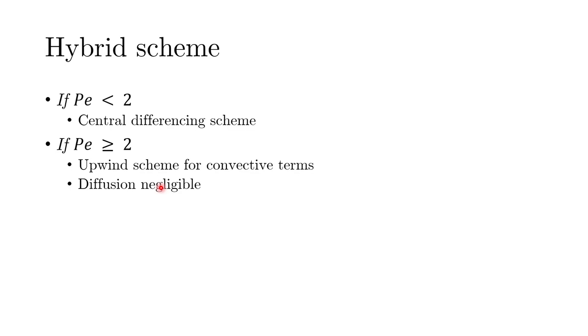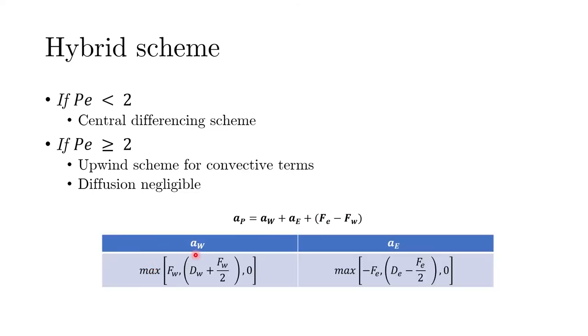In summary, if the Peclet number is less than 2 we use central differencing; if it is greater than 2 we take only the convective terms and ignore diffusion. In terms of finite volume coefficients, the main coefficient A_P is expressed as A_W plus A_E plus the divergence of velocity, where A_W and A_E are given in a specific form using a maximum function with three arguments. You can refer to the textbook by Versteeg and Malalasekera for the full derivation.